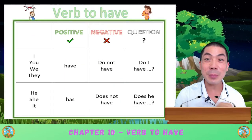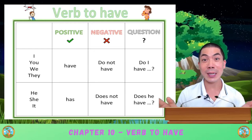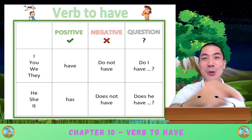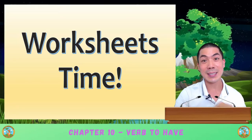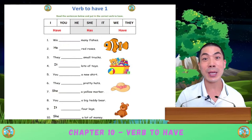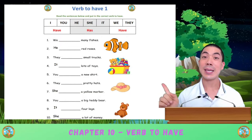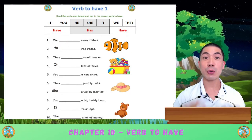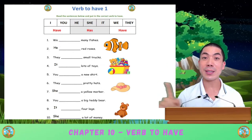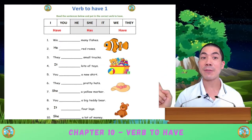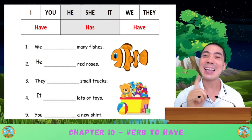If you remember this table and you can use verb to have correctly, then you're amazing and you're ready for the worksheets. In today's class we have two worksheets, and this is the first one. In this worksheet, you have 10 sentences and you have to read these sentences and fill in the blank with the correct verb to have.